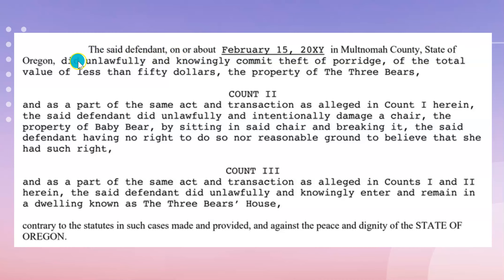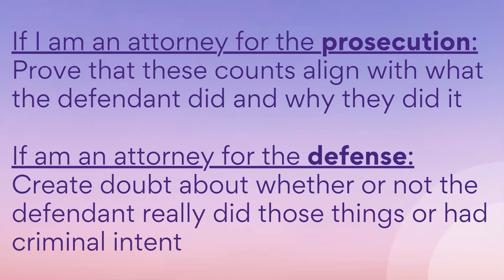She is accused of having unlawfully and knowingly committed theft, unlawfully and intentionally damaging property with no reasonable ground to believe she had a right to do so, and unlawfully entering their house. If you're the prosecution, you must prove beyond a reasonable doubt that these counts align with what the defendant did and intended. If you're the defense, you must create doubt about whether she did those things, had criminal intent, or bears criminal responsibility.